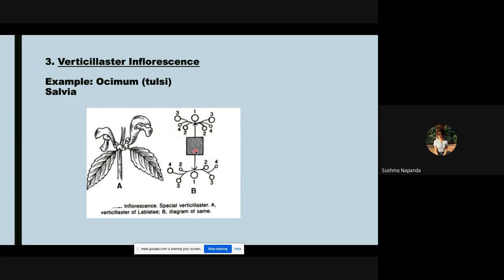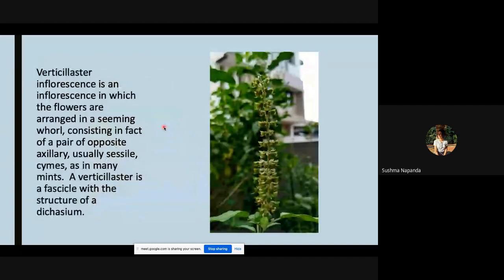The inflorescence is initially dichasial, that is there are two flowers, and then it becomes monochasial, that is one flower. One flower arises. It is an inflorescence in which the flowers are arranged in a seeming whorl consisting in fact of a pair of opposite axillary usually sessile cymes.